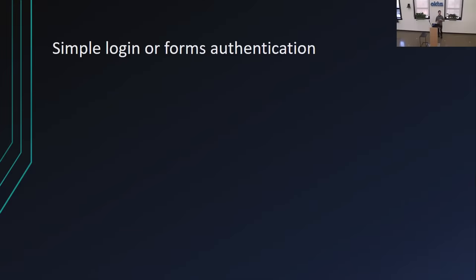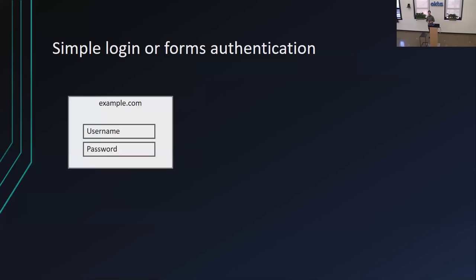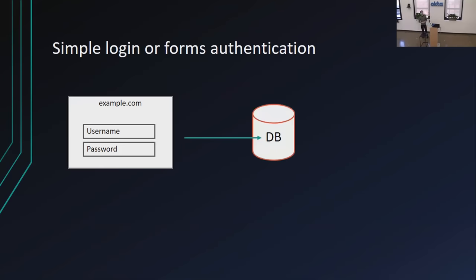Before we even talk about OAuth and OpenID Connect, I want to set the stage and talk about the most basic type of authentication you could do on the web — the simplest case. I'm calling this simple login, or sometimes it's called forms authentication. This is just a simple example of where you have an email and password, or a username and password form on a website. The user enters their information, and your back-end website code is going to go hit a database somewhere, look up whether that username and password actually exists.